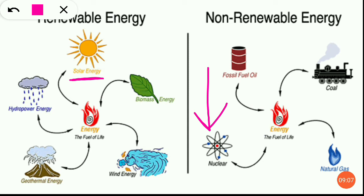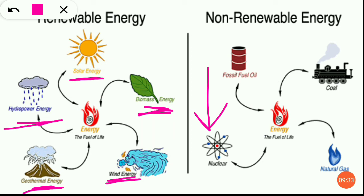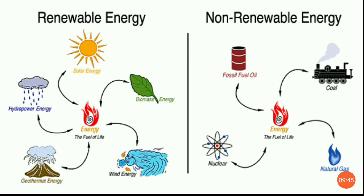Solar energy sunlight को trap करके आपको गरम पानी या खाना cook करने में help करती है — जैसे solar cooker। Biomass energy में हम compost वगेरा बनाते हैं। Hydro power energy में हम water use करते हैं। Geothermal energy, wind energy, tidal energy — all these are renewable sources of energy. आप इन्हें बार-बार use और create कर सकते हैं। So we must use renewable sources of energy and decrease the use of fossil fuel, otherwise they will disappear from our earth and future generations will only see fossil fuels in images.